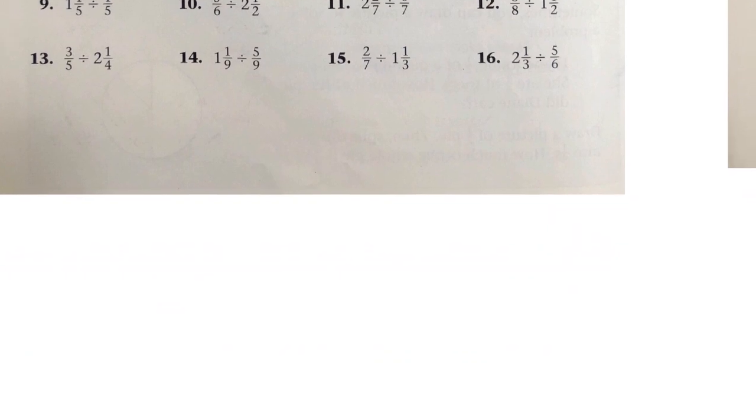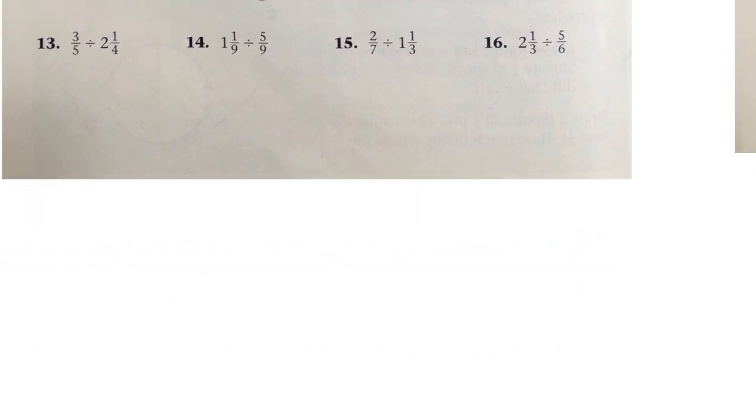I'm going to scoot it way up so I can practice underneath. So we could take a look at number 13. We have 3/5 divided by 2 and 1/4. So this would be 4 times 2 plus 1. 4 times 2 is 8, 8 plus 1 is 9. Then the original denominator stays as the denominator, in this case 4.